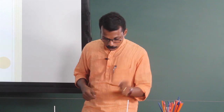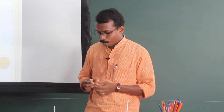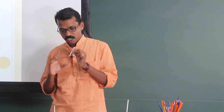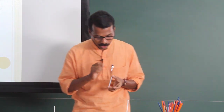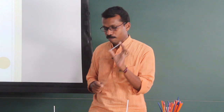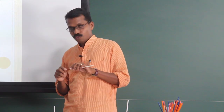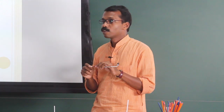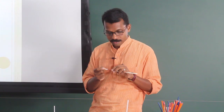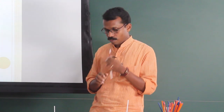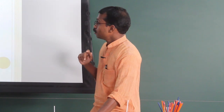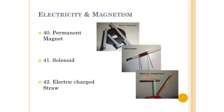In electricity and magnetism, we can make permanent magnets using straws: a piece of straw filled with iron filings and rubbed with a magnet becomes a permanent magnet. For a temporary magnet, insulated copper wire wound over a straw with a nail inserted inside, connected to a battery, forms a solenoid or electromagnet. An electrically charged straw: rub a straw with wool, it gets charged and can be tested.